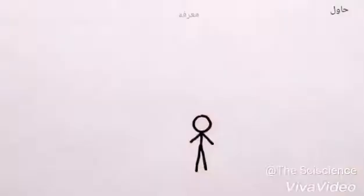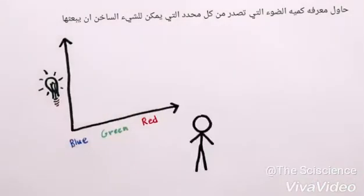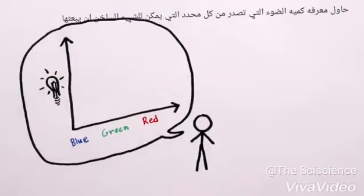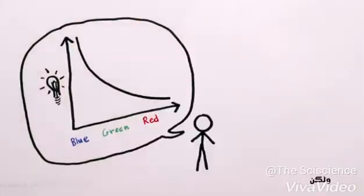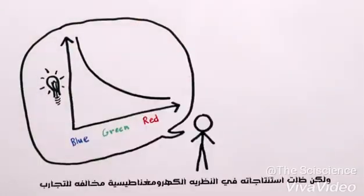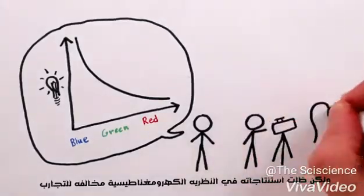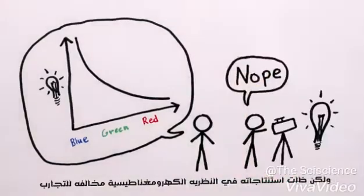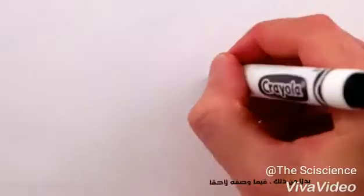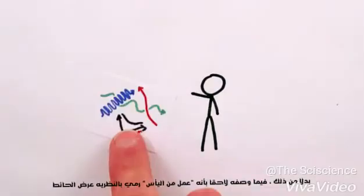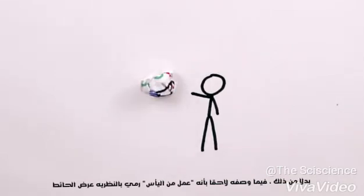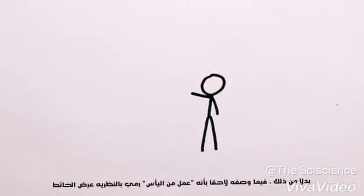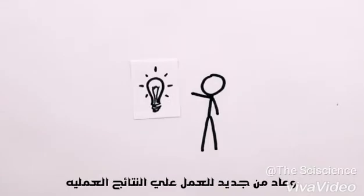He tried to work out how much light of each color a hot object emits, but his predictions based on electromagnetic theory kept disagreeing with experiments. Instead, in what he later called an act of despair, he threw the existing theory out the window and worked backwards from experimental measurements.